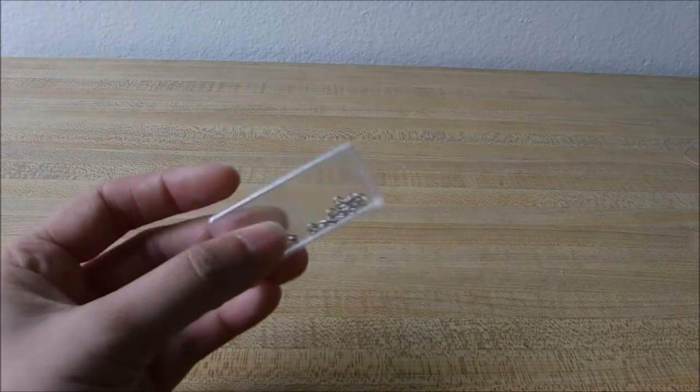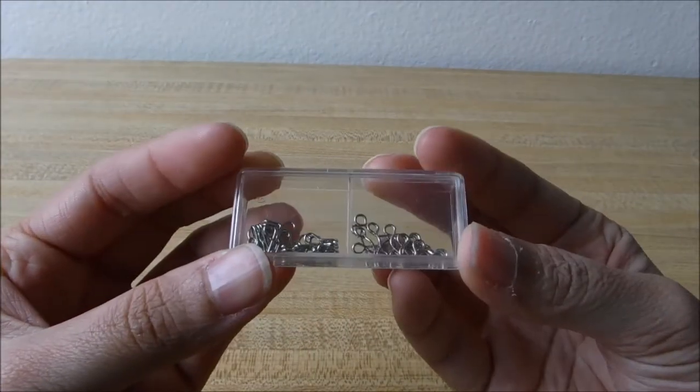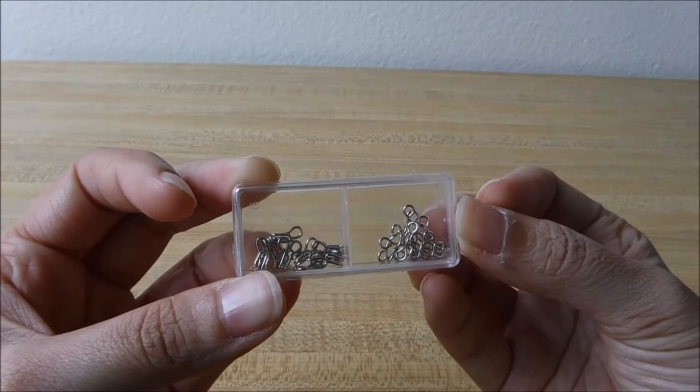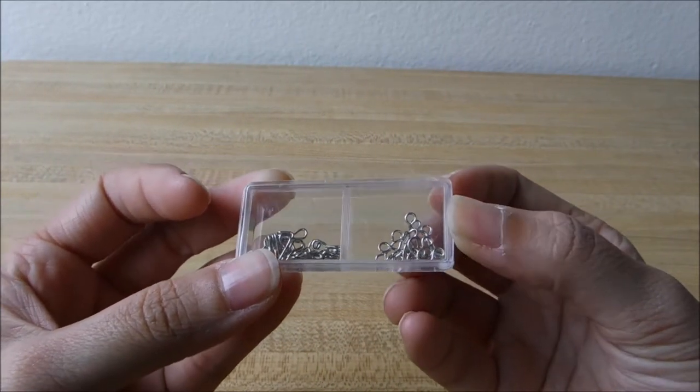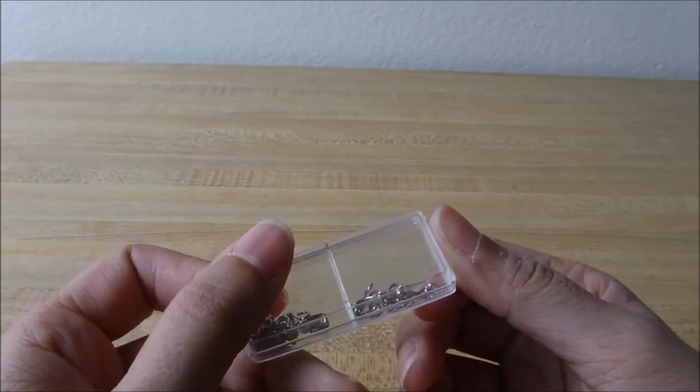Hooks and eyes. These are a really great closure method. They're great for permanent and temporary closures. If you don't want to put in buttons or zippers, you can also put them in last minute. So on the drive over to an event, you'll always have a closure method on hand. They're great to have as an emergency backup method.